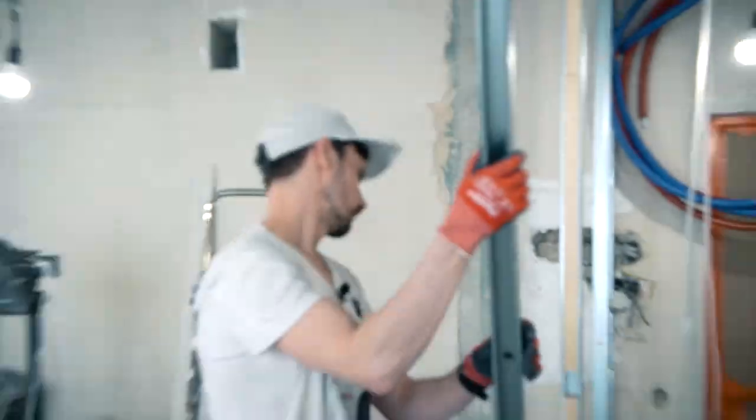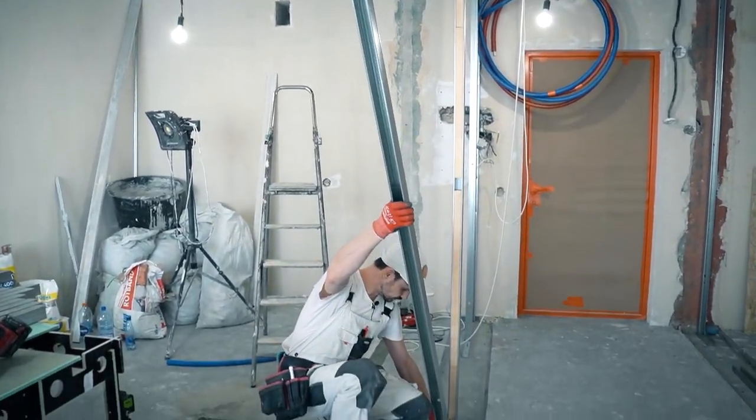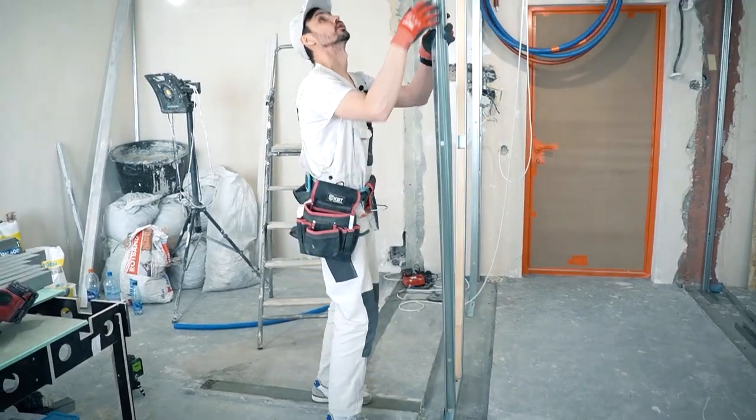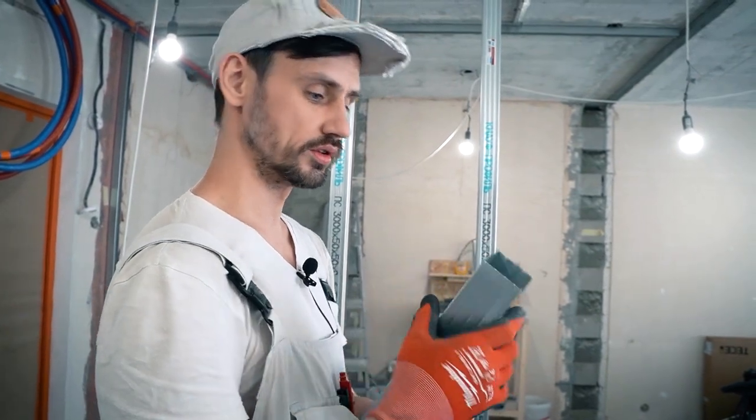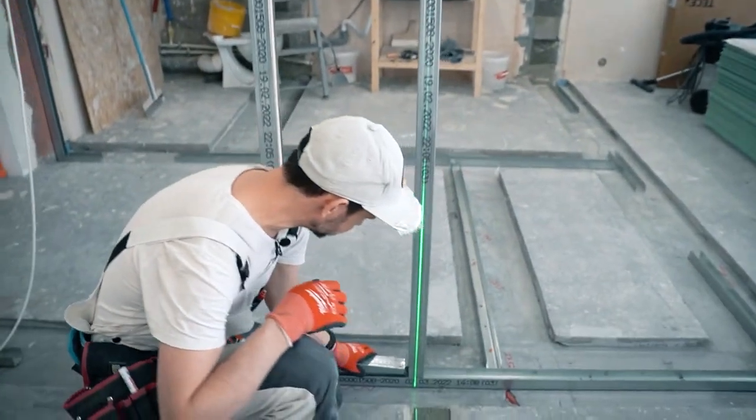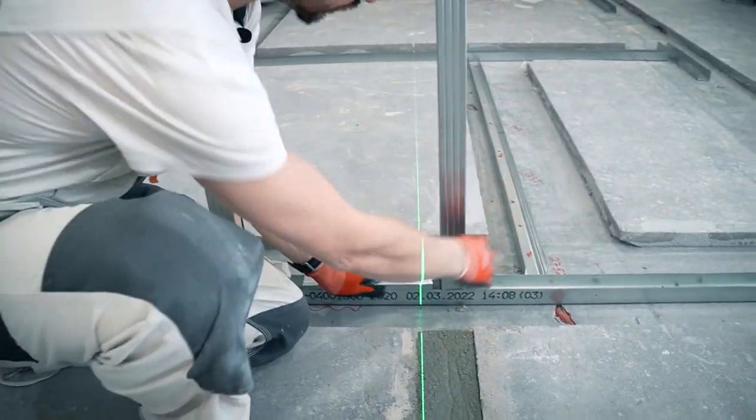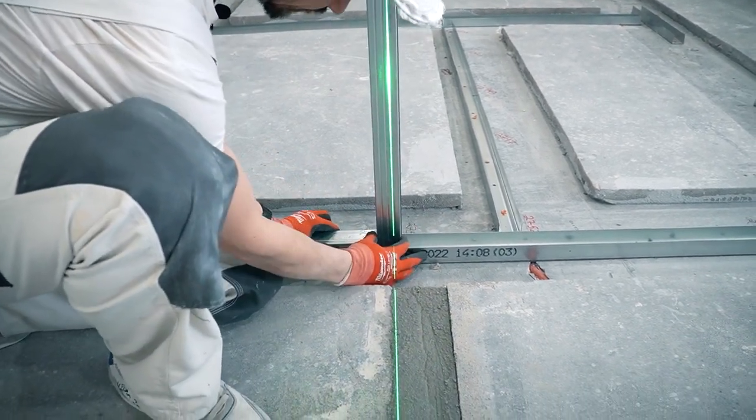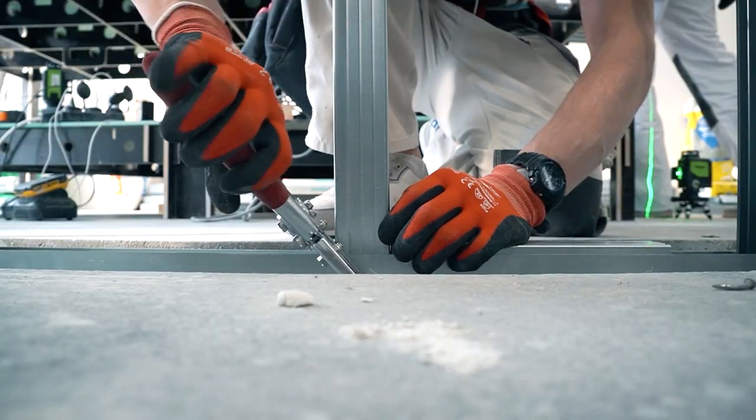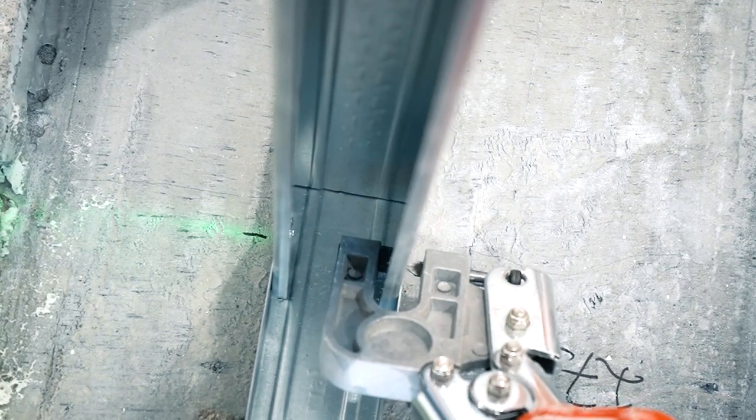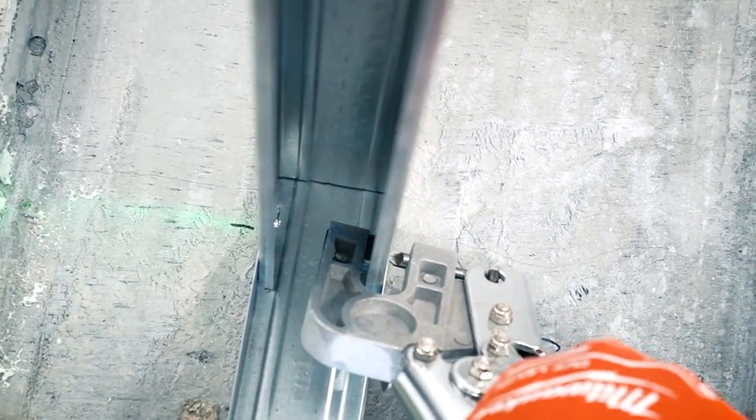And here the guys give us another useful tip from their experience. In order to quickly install all the structural profiles, make a measuring stick out of the same profile with the desired spacing. In our case it's 40 centimeters. Put it between the profiles and you can fasten our entire structure with a crimper. Put it at a 90 degree angle and attach it.